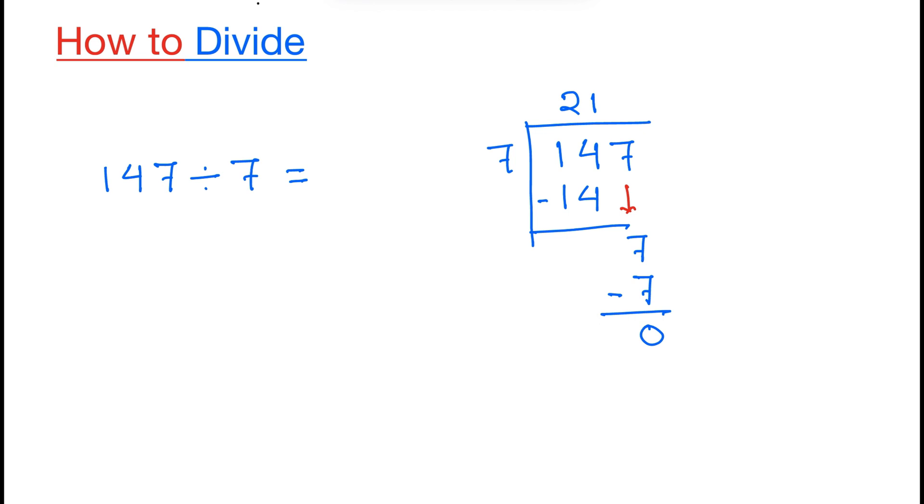Therefore, 147 divided by 7 is equal to 21. And this is our final answer. Thank you for watching.